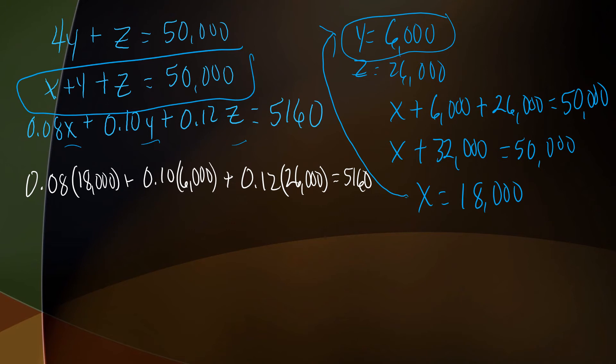All right, 18,000 times 0.08, well, that equals 1,440, plus $6,000 times 10%, or 0.1, that's $600, plus, I got 26,000 earning 12%, 26,000 times 0.12, that equals 3,120. Now I sure hope this is going to total 5,160. So let's see, 1,440 plus 600 plus 3,120. Shazam, how about it, 5,160 equals 5,160.